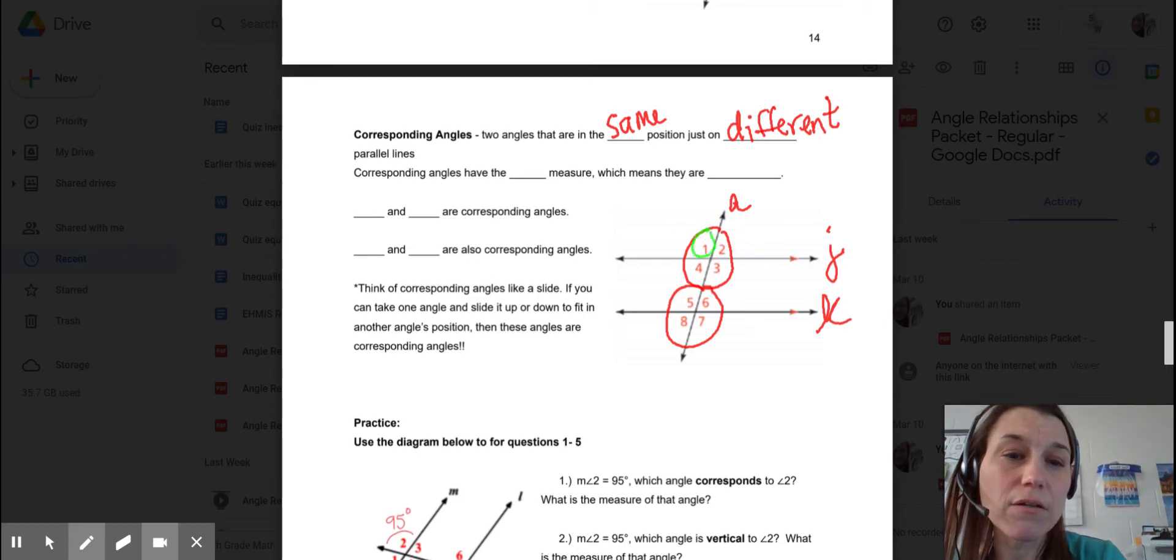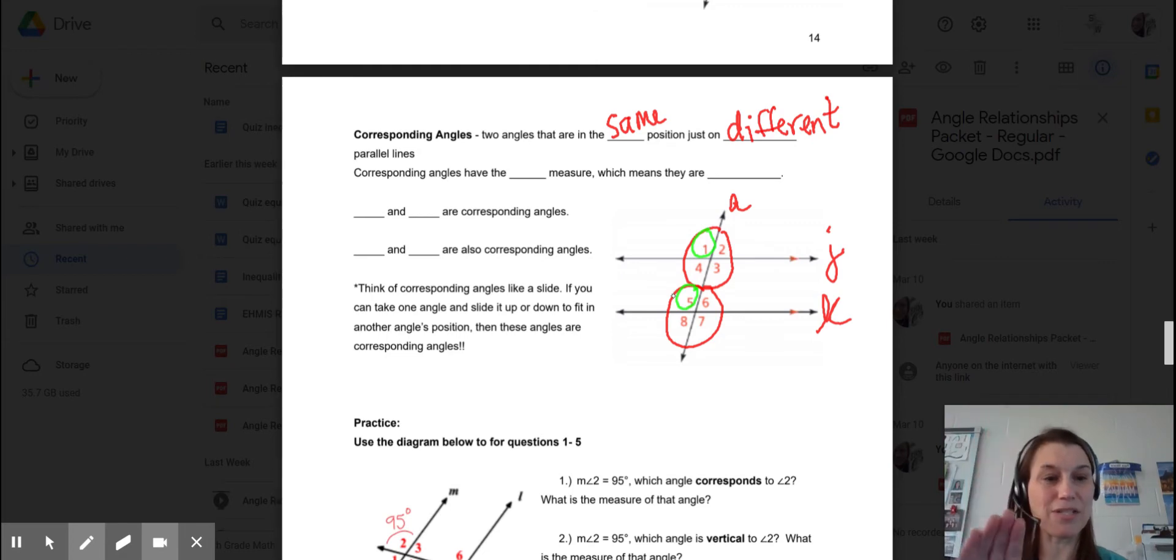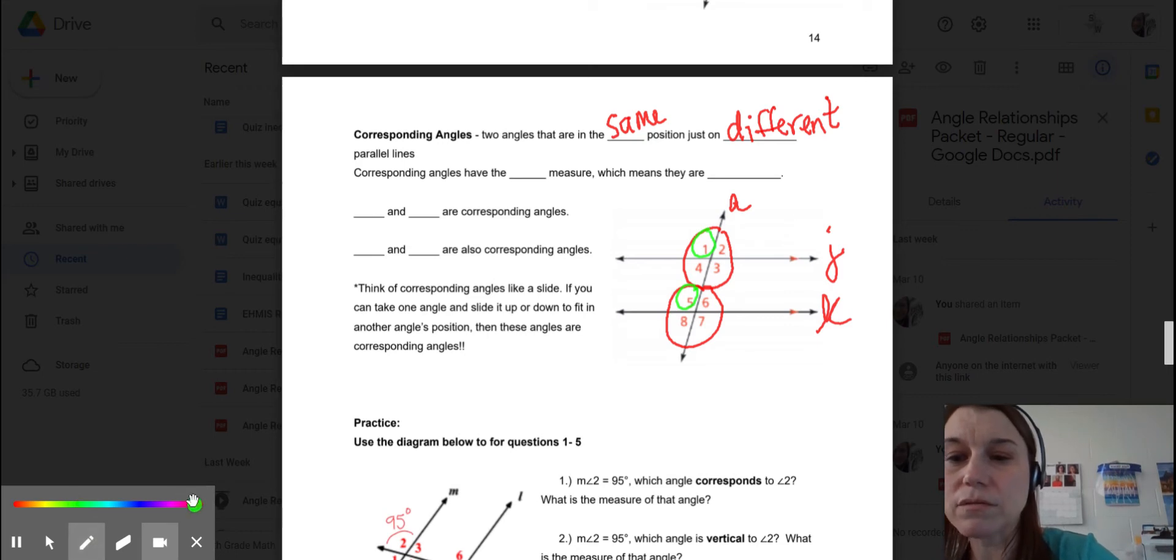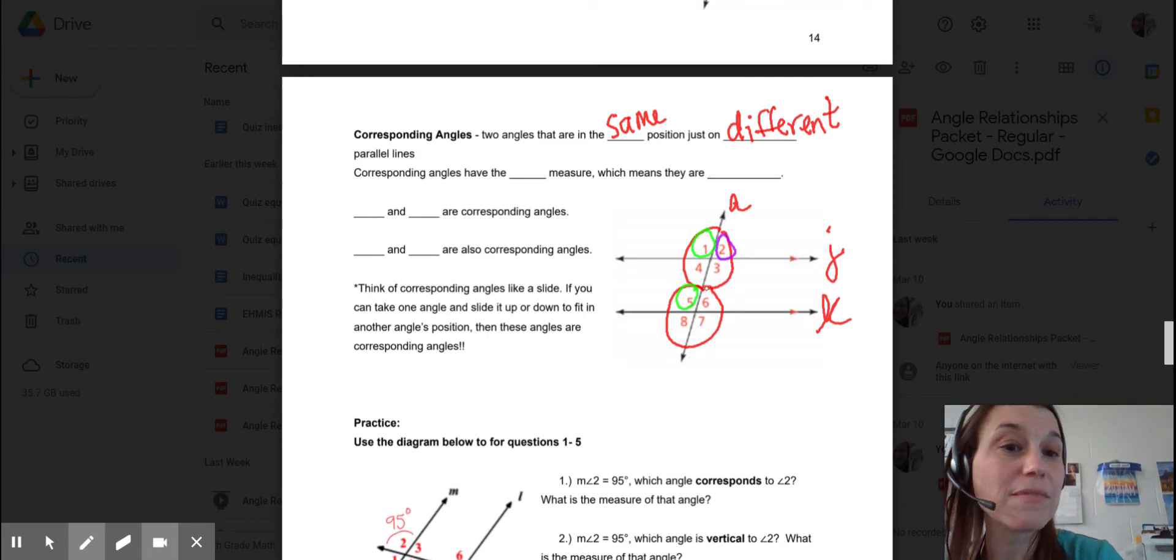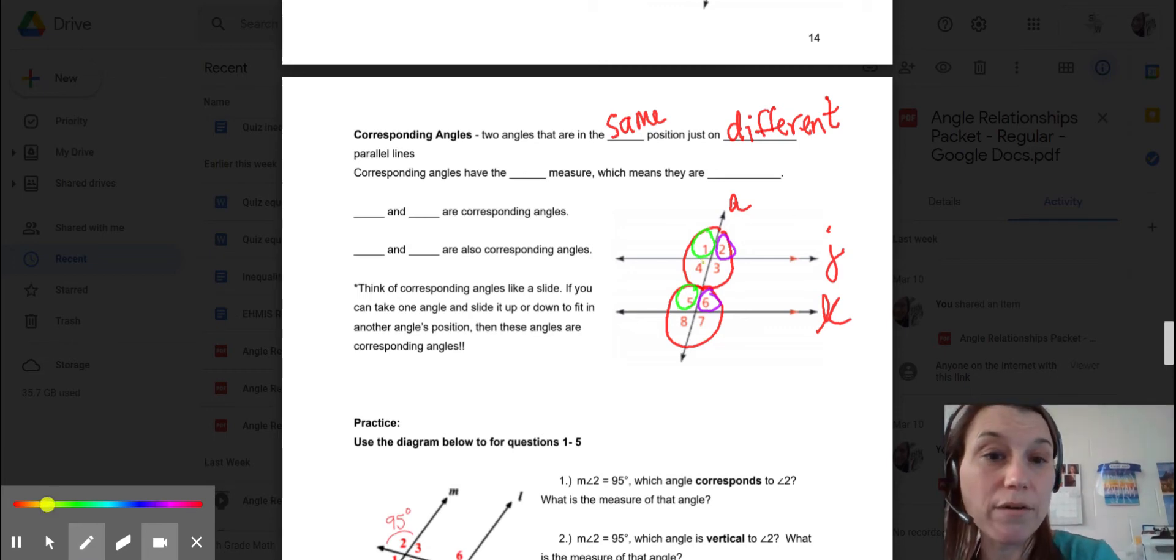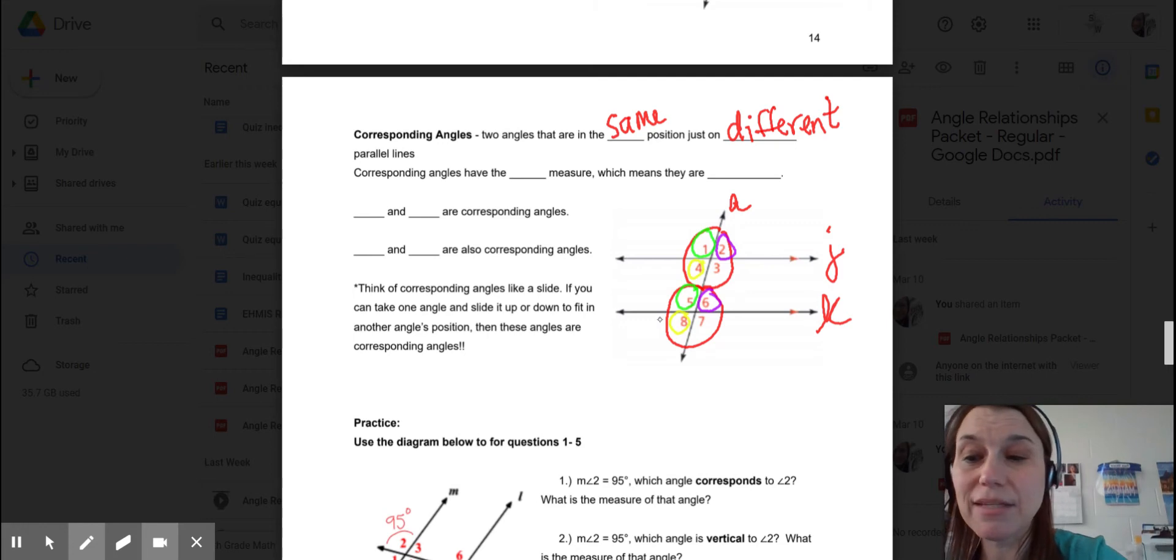So angle 1 corresponds with angle 5. See how they're in the same place, just a different line? It's almost like you could slide it down. So angle 2 corresponds with angle 6. Angle 4 corresponds with angle 8. And then finally, angle 3 corresponds with angle 7.